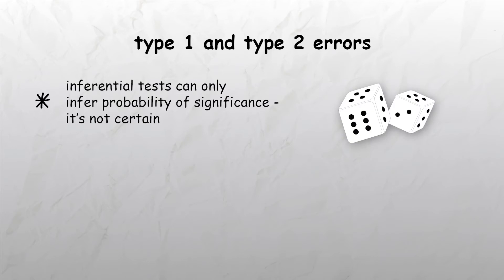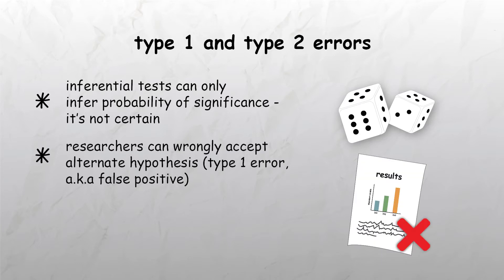However, even with a 5% probability of chance, it's important to remember that we are only dealing with probabilities and not absolute certainties. This means that in a few rare cases researchers might accept the alternate hypothesis when actually the null hypothesis is true. This is known as a false positive or a type 1 error.